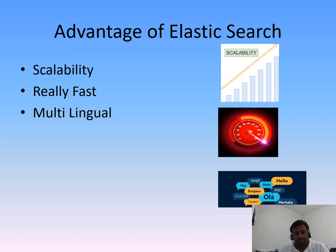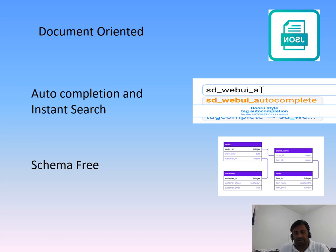The advantages of Elasticsearch are: it is easily scalable, you can increase speed and capability; it's really fast; it supports multiple languages so it's multi-lingual; it's document-oriented and based on JSON; it provides auto-completion and instant search so when you type, results auto-populate; and it is schema-free, so you don't have to worry about schemas.